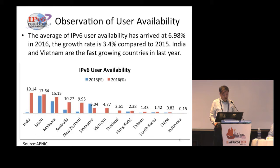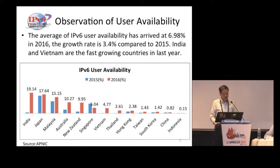The third common criteria is user availability. According to the APNIC survey data, the average IPv6 user availability arrived at 6.98% last year — a growth rate of about 3.4% compared to 2015. India and Vietnam are the fast-growing countries in terms of this measurement criteria.